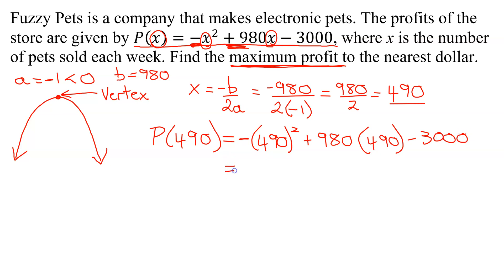So now it's just arithmetic. 490 squared, I've worked out on my calculator, is 240,100. So it's the opposite of that. So it's negative 240,100 plus 980 times 490 is 480,200 minus 3000. So now I entered this into my calculator, and I got 237,100.